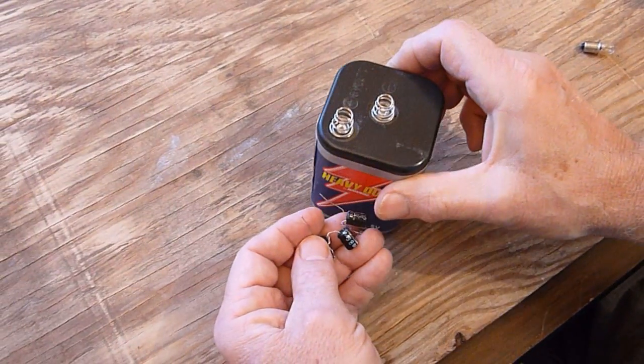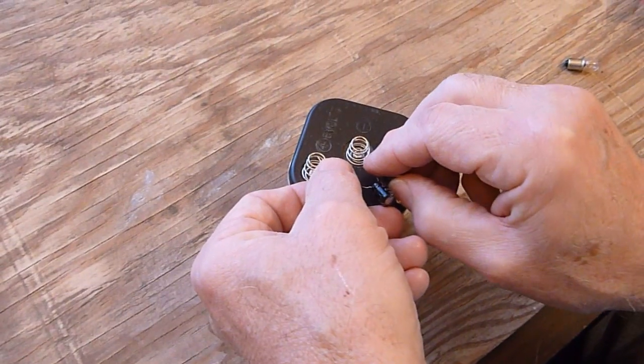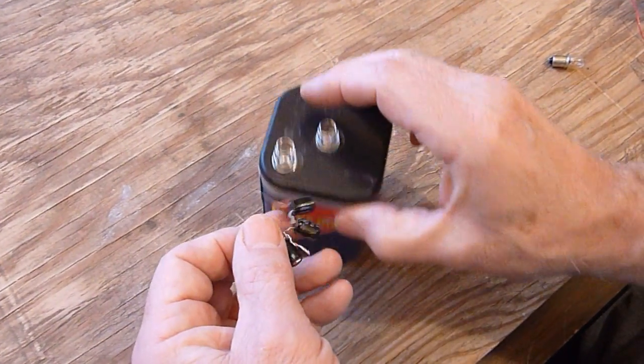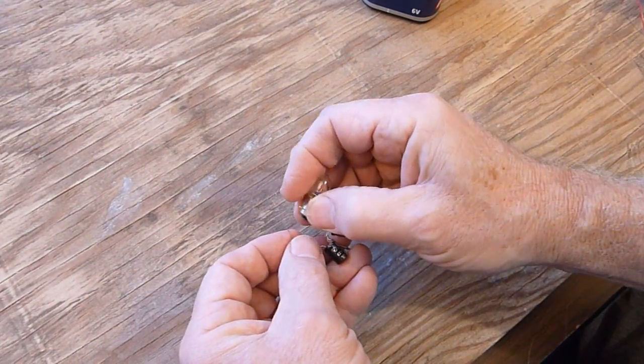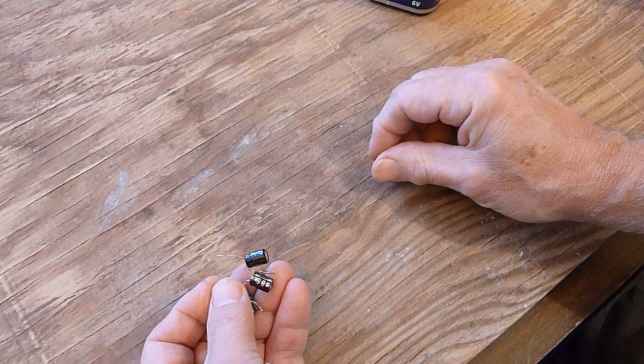Next, I connect the capacitor to the six volt battery to charge it up. Okay, now I again connect the light bulb to the capacitor.